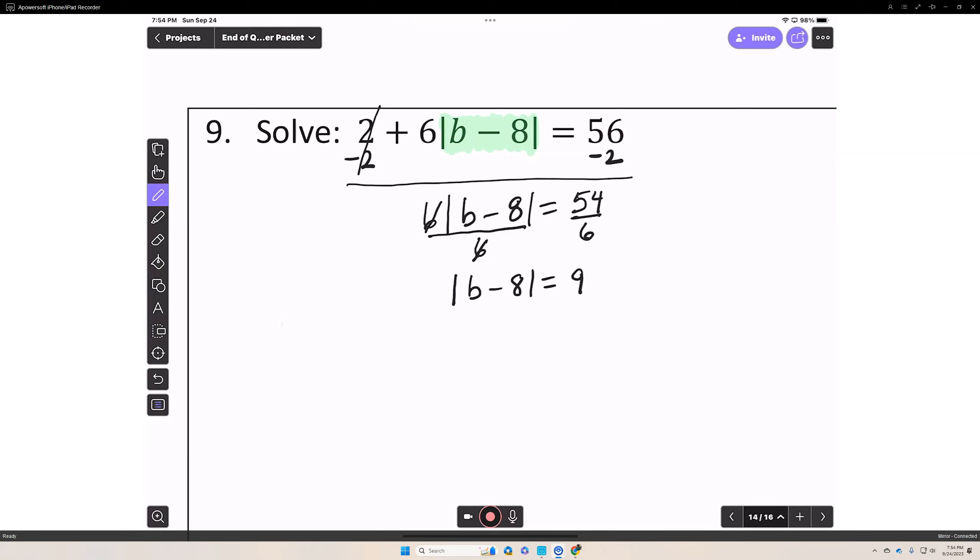Now that we've isolated the absolute value by itself, the absolute value will have two possibilities. So you'll have two equations.